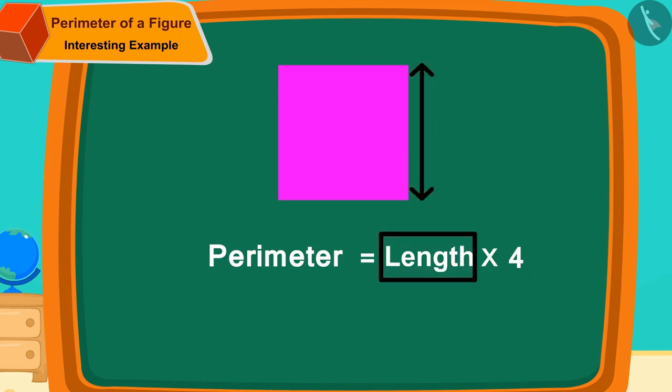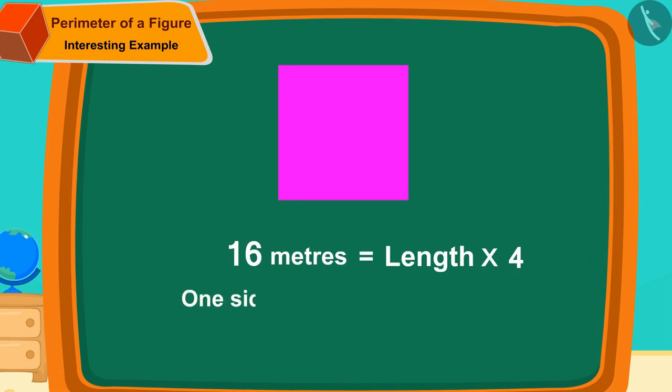In other words, 4 times the length of one side of the tablecloth is equal to 16 meters. Therefore, the length of one side will be 16 divided by 4, that is 4 meters.